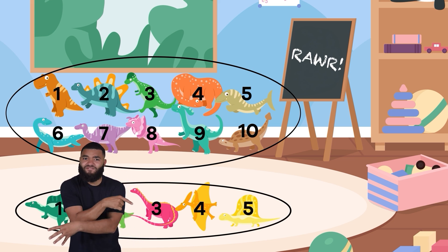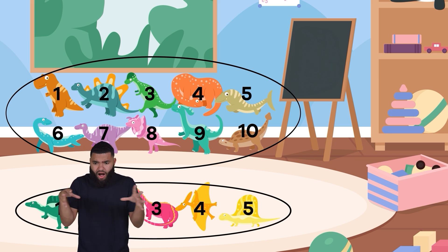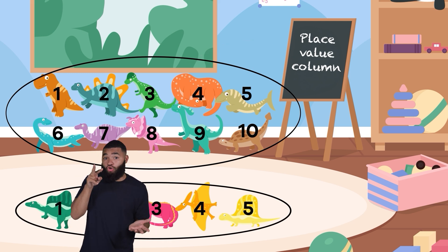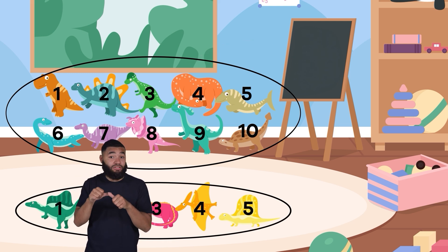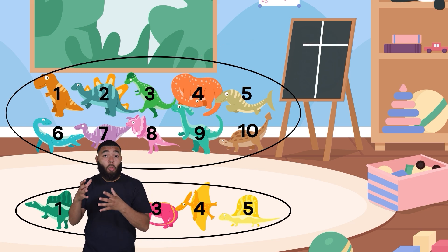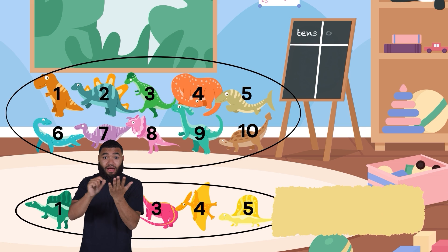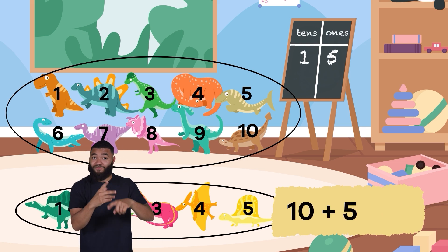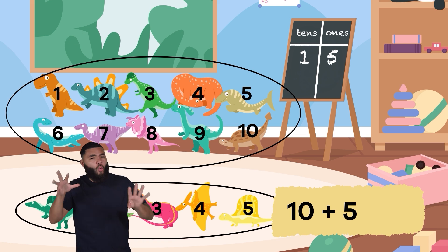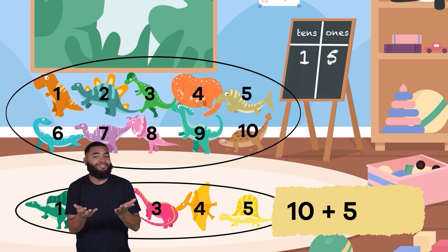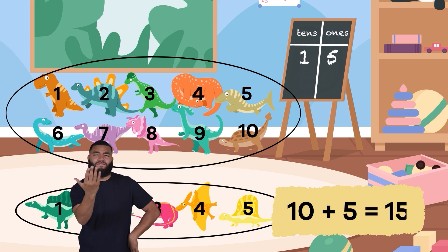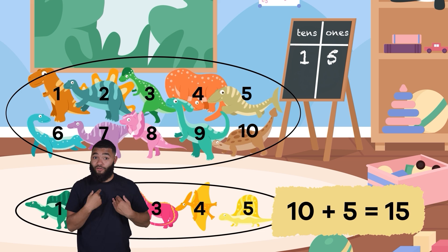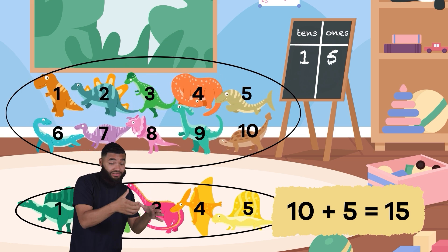So how can we find the total number of dinosaurs? First, we can look at our place value columns. We can also write out ten plus five. How many dinosaurs do we have total? That's right! The answer is fifteen dinosaurs, because there is one group of ten plus five ones.